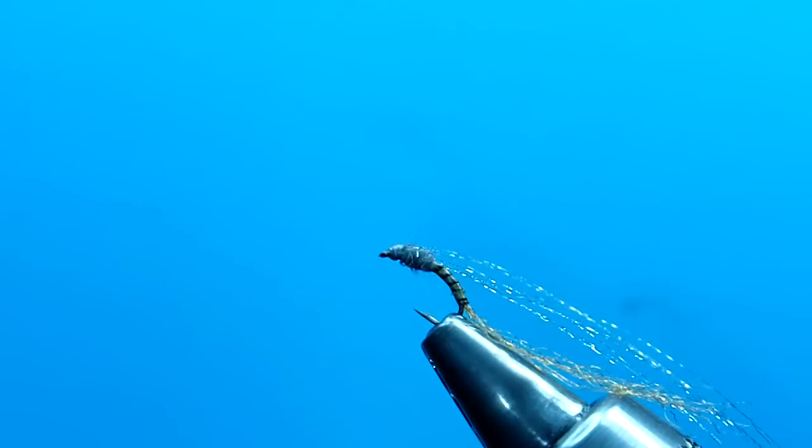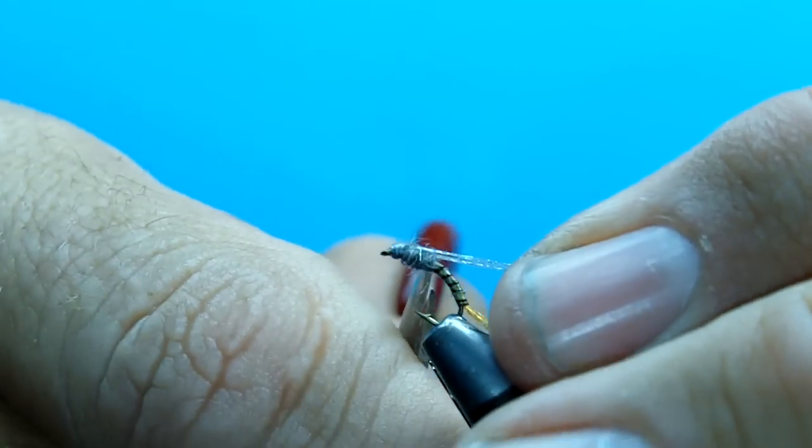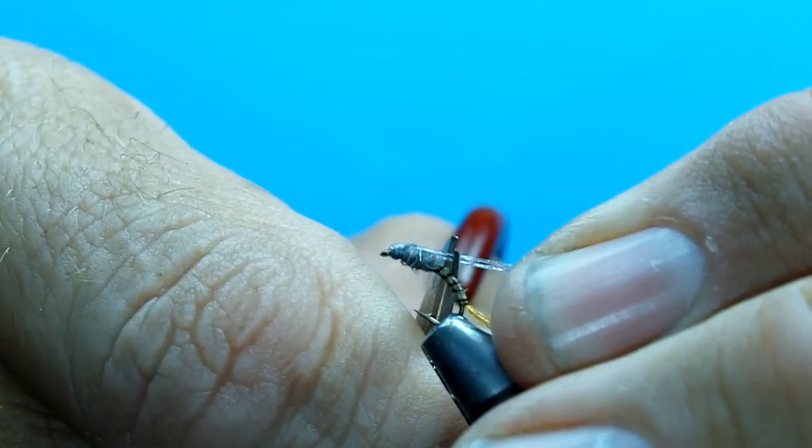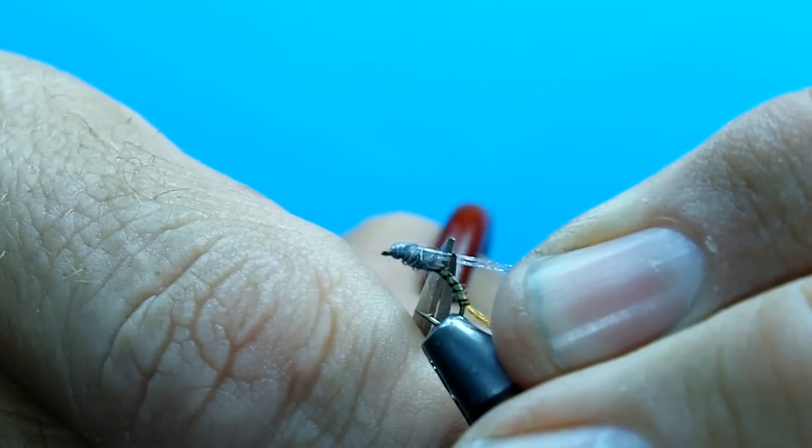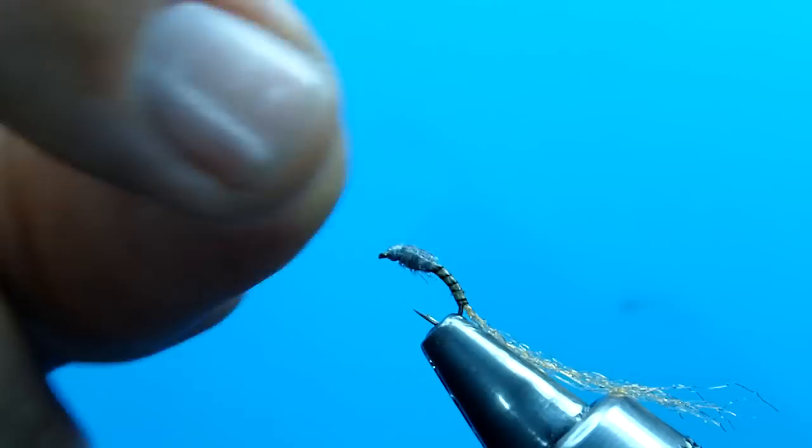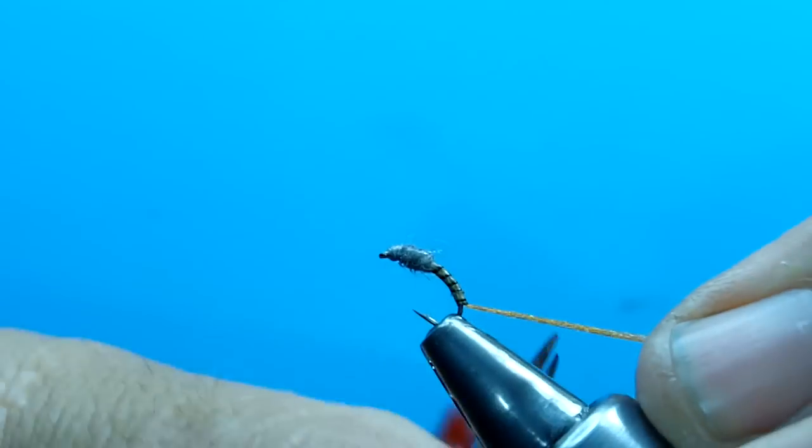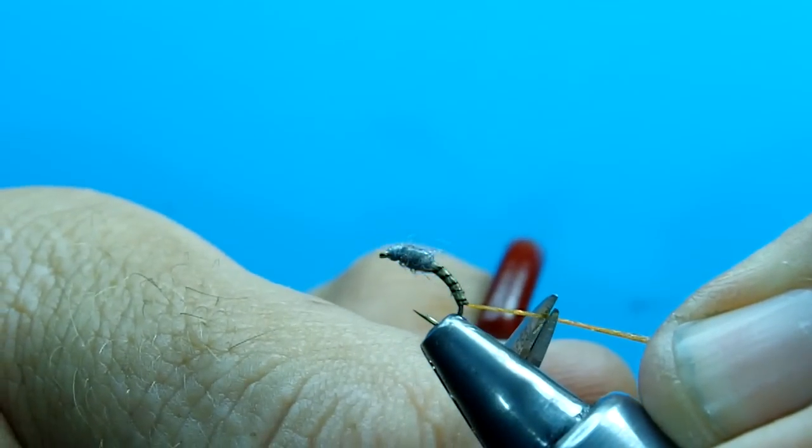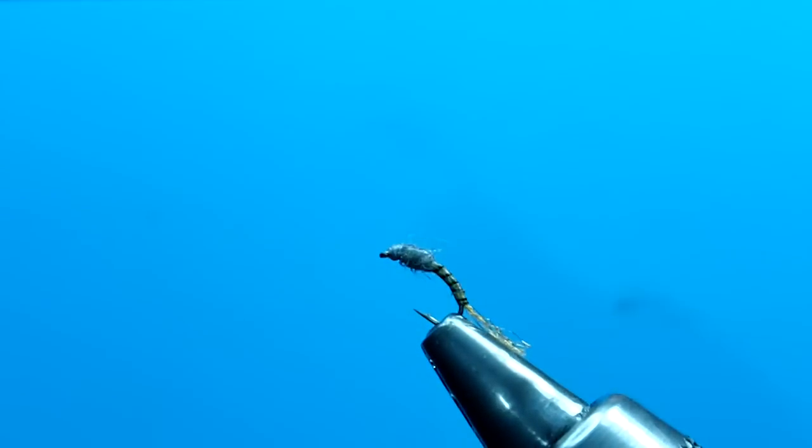Clip your tensile. And then cut your legs just on the legs just past the back of the thorax. Is sufficient. And I'll show you a couple views. And I'll cut the trailing shuck also. About the length of the abdomen.